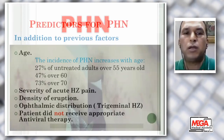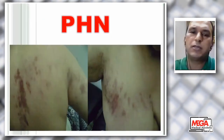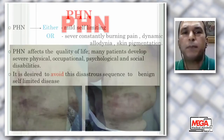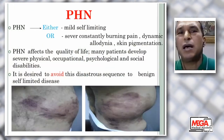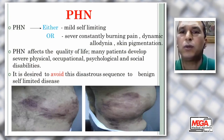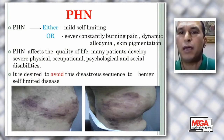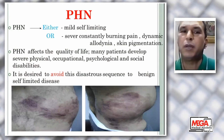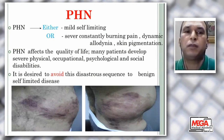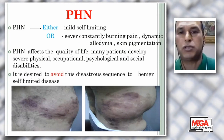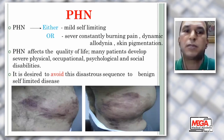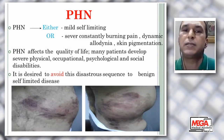Remember the predictors for post-herpetic neuralgia. Notice the pigmentation — this is associated with allodynia and pain in the pigmented area. Post-herpetic neuralgia is either a self-limiting mild disease or severe, with constantly burning, dynamic allodynia and skin pigmentation. Post-herpetic neuralgia affects the quality of life. Many patients develop severe physical, occupational, psychological, and social disabilities. Therefore, it is important to avoid this disaster.